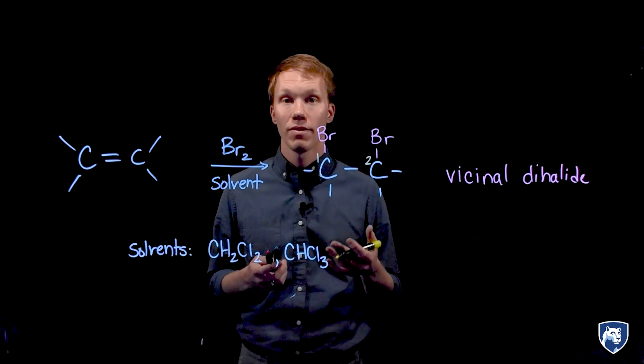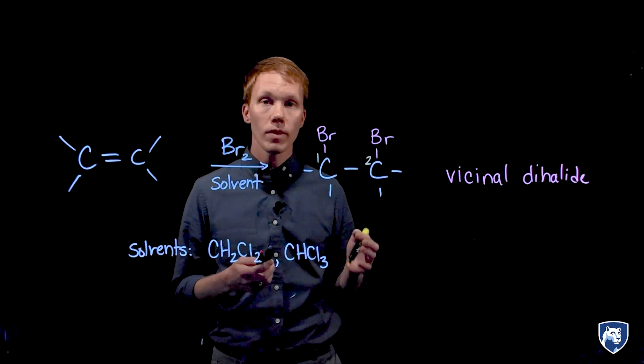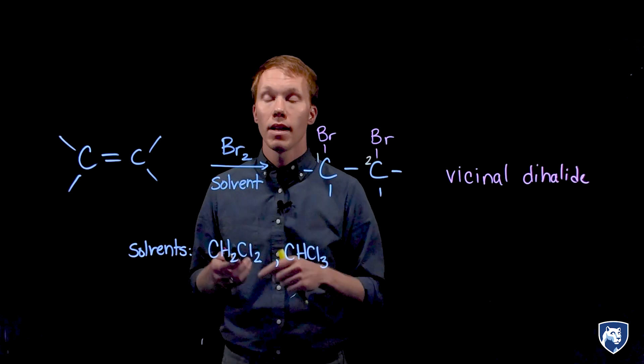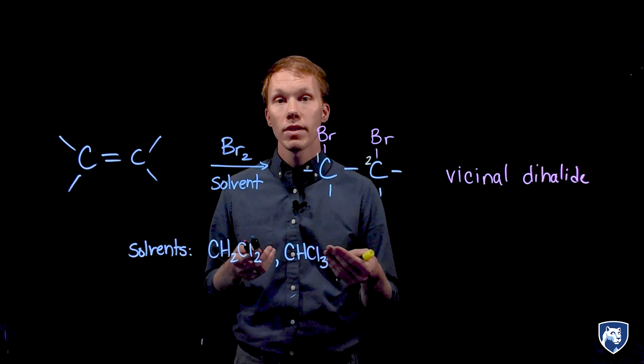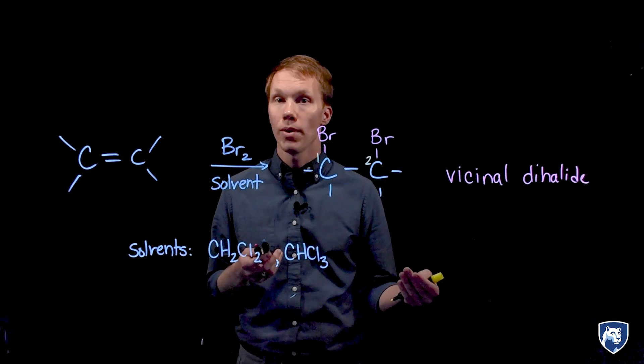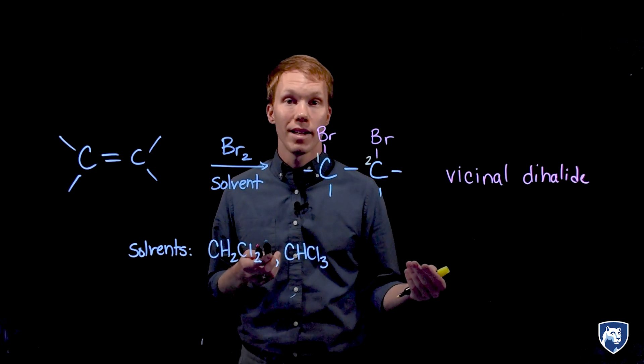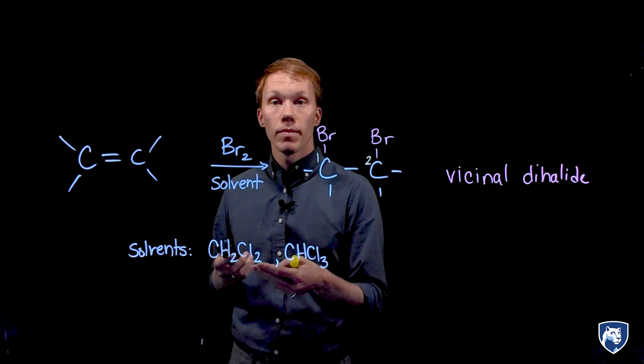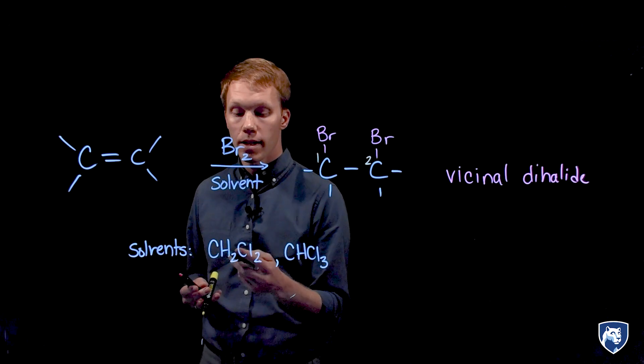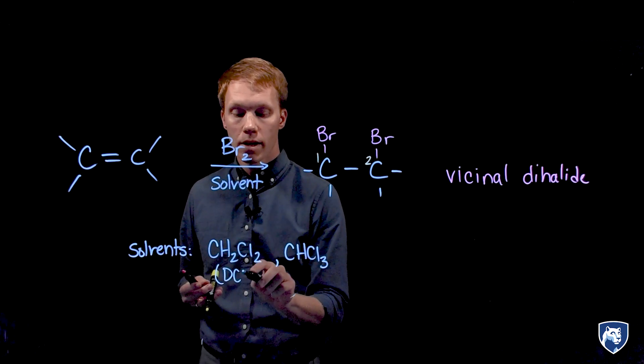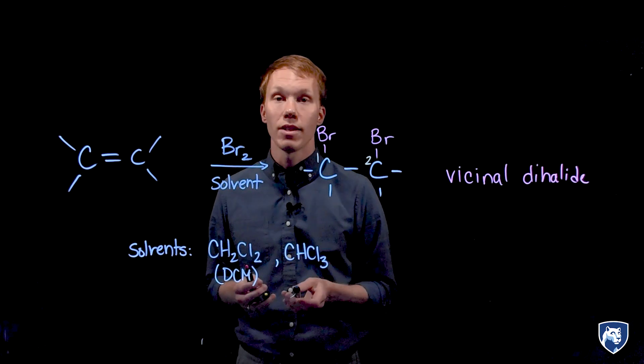A solvent is necessary to bring these reagents together in the same phase. So typical solvents are classified as polar aprotic, where there's not an acidic hydrogen. Typical solvents for this type of reaction are dichloromethane, which you might see abbreviated as DCM, or chloroform, CHCl3.